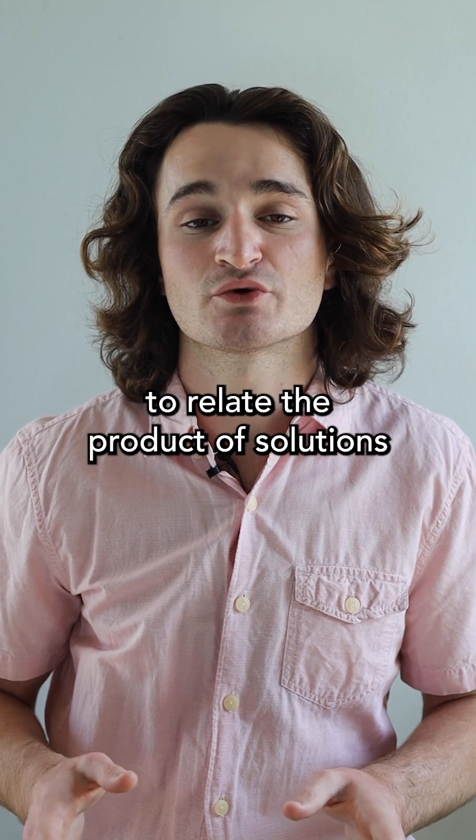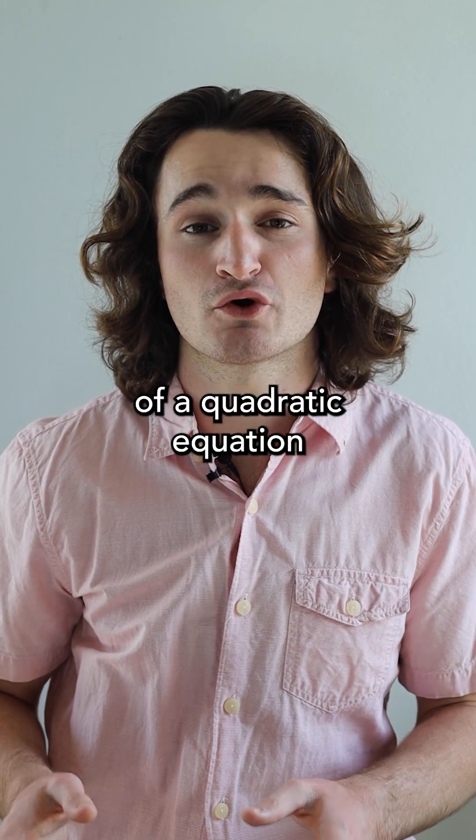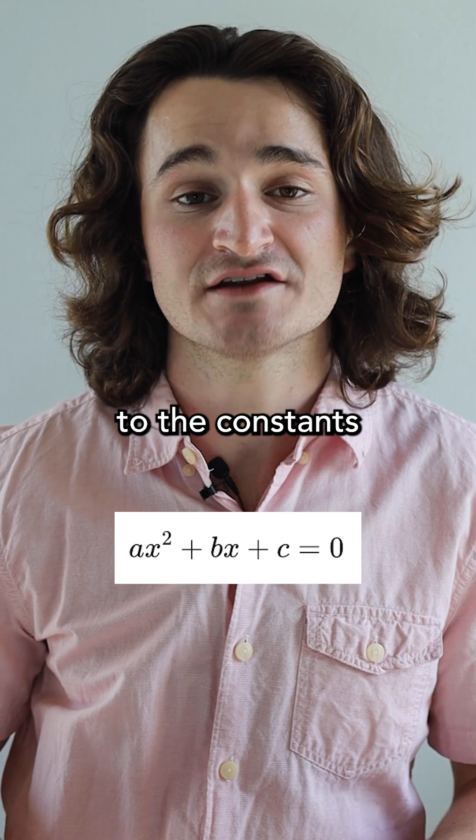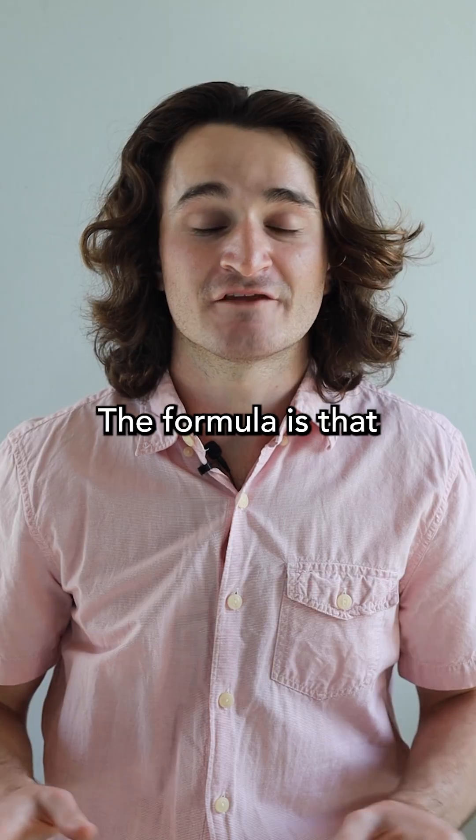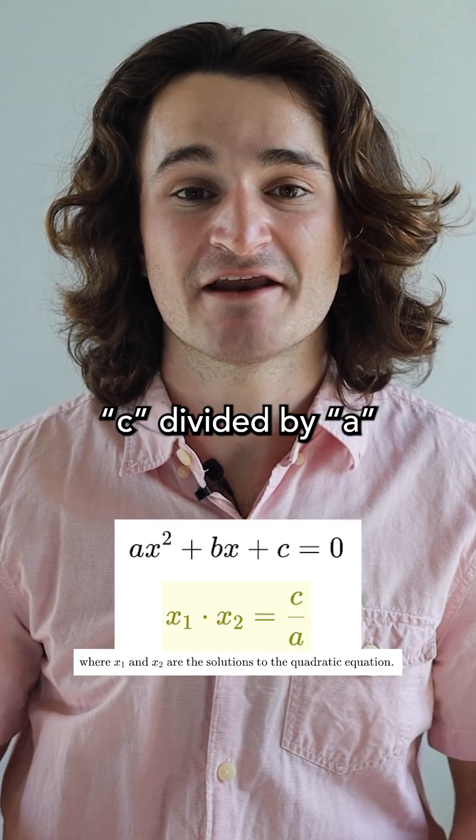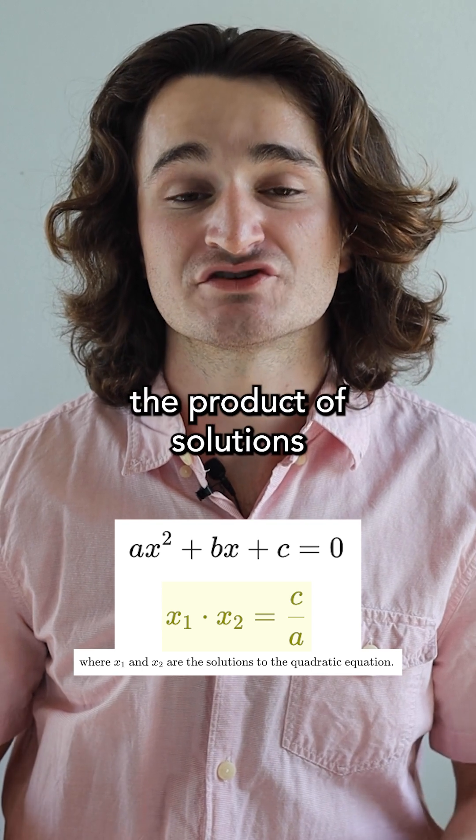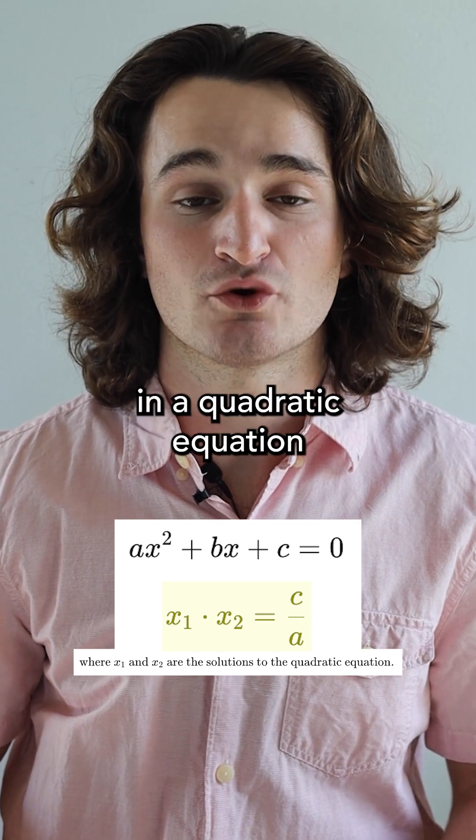there's a very simple formula to relate the product of solutions to a quadratic equation to the constants in the quadratic equation. The formula is that c divided by a is equal to the product of solutions in a quadratic equation.